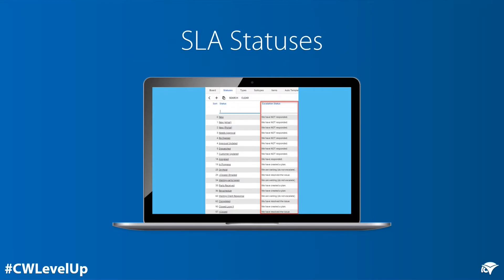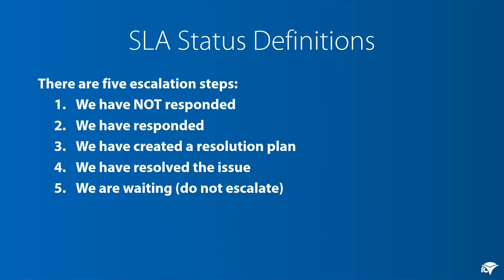SLAs are measured by using the service ticket status. Each service ticket status has an escalation setup step attached to it. There are five escalation steps. We have not responded: the ticket has been created and no one has reviewed or scheduled the issue for a resource. We have responded: the ticket has been acknowledged and the customer has been notified by a resource that is being scheduled for resolution. We have created a plan: a resource is now working to resolve the issue or complete the request. We have resolved the issue: service has been restored or the request has been completed. We are waiting — do not escalate.